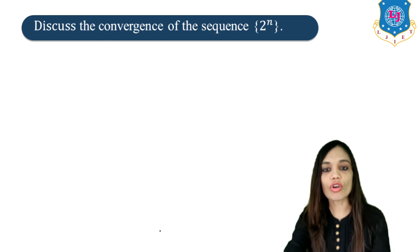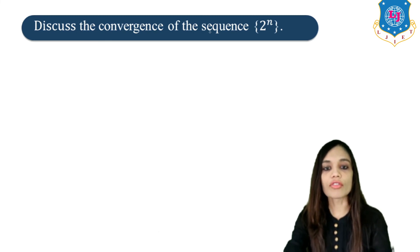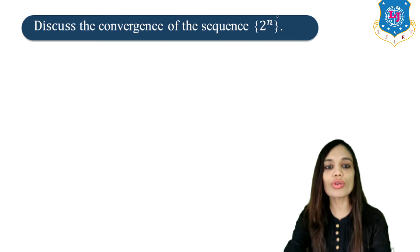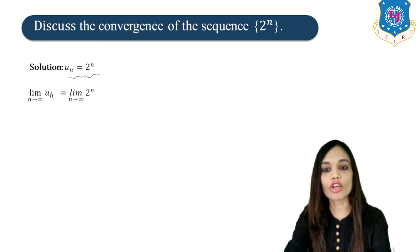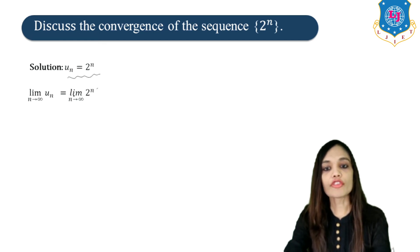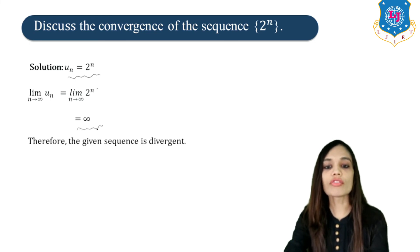Next, discuss the convergence of the sequence 2^N. Here UN = 2^N, so lim(N→∞) 2^N = ∞. Therefore the given sequence is divergent.